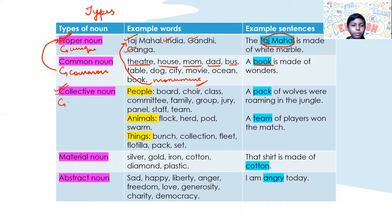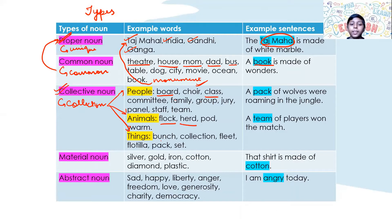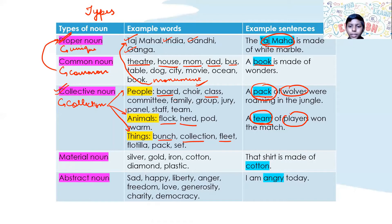Collective noun. It is a word for a collection of nouns — a collection of people, animals, and even things. For people: crowd, class, committee, family, etc. For animals: flock, herd, etc. For things: bunch, collection, fleet, etc. Example sentence: 'A pack of wolves were roaming in the jungle.' Also, 'A team of players.' Here team and pack are the collective nouns — they tell us about a collection of wolves and a team of players.